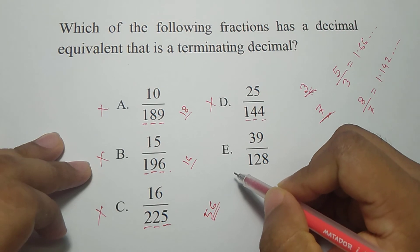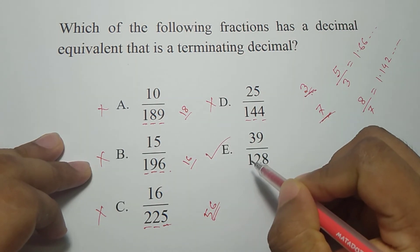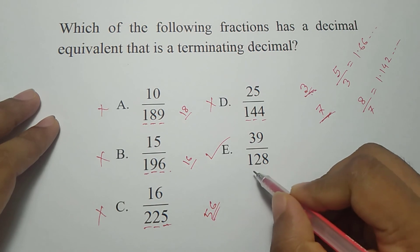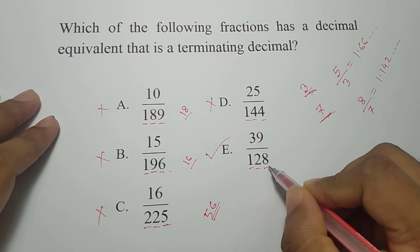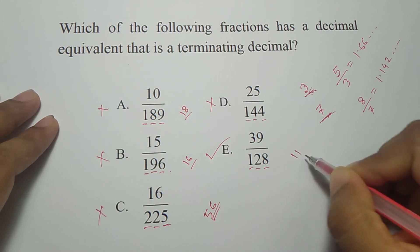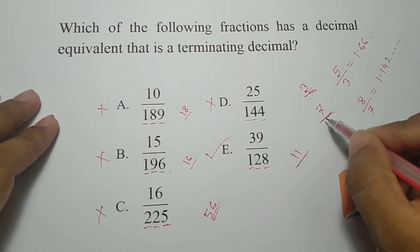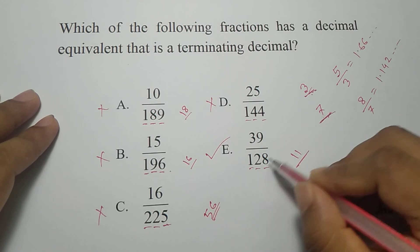As it's a GRE question we can select E, but we can check. 1 plus 2, 3, 8, 8, that is 11, so there is no 3, then we can divide this with 7.